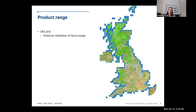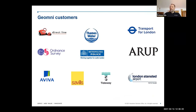All three products are published twice a year and are available via the Digimap portal for institutions that have signed up. You can use them in Roam as a backdrop or download the data for further analysis. Outside of academia, customers come from a wide variety of backgrounds including insurance, government, utilities, consultancies, and national mapping agencies.